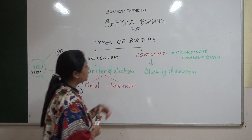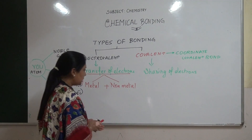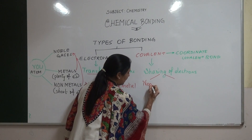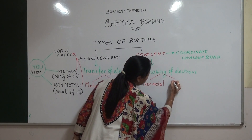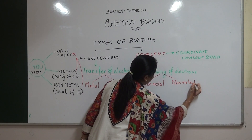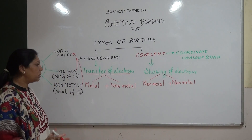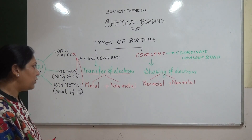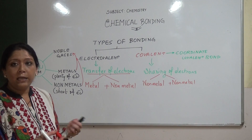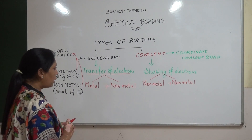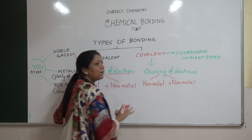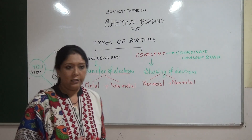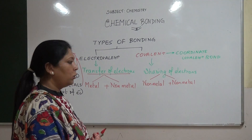Now we come to the covalent bond. A covalent bond is formed between a non-metallic atom and another non-metallic atom. Both are non-metals, so both have a shortage of electrons. Now they cannot lose or gain electrons — both are short of electrons. So what do they do? They share the electrons mutually. Suppose you have one chocolate and a very good friend — what will you do? You will share it.